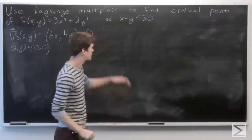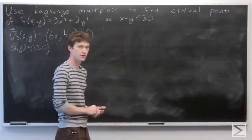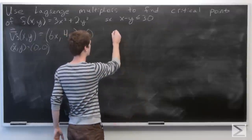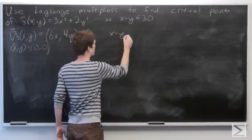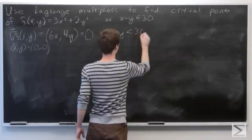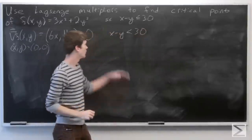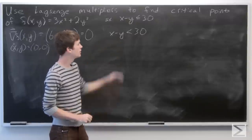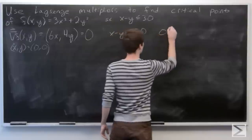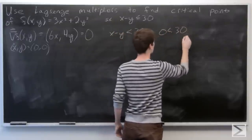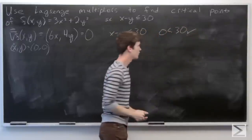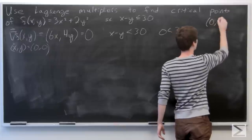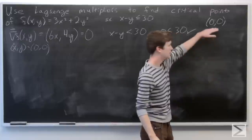Now we want to see if this critical point satisfies our constraint. We'll first look at the interior, so x minus y is less than 30. With x equal to 0 and y equal to 0, our left-hand side is 0, and clearly 0 is less than 30. So we have one critical point to check, and that's at (0, 0).